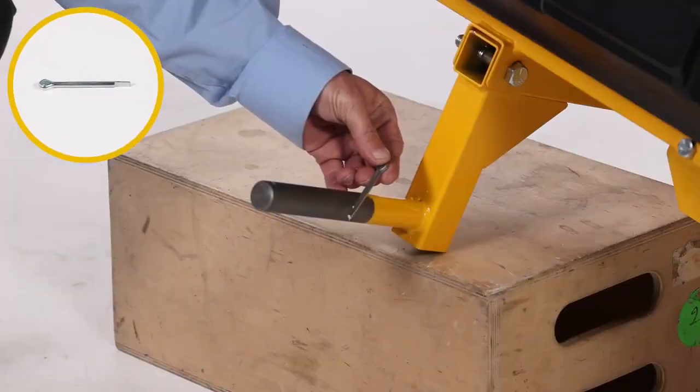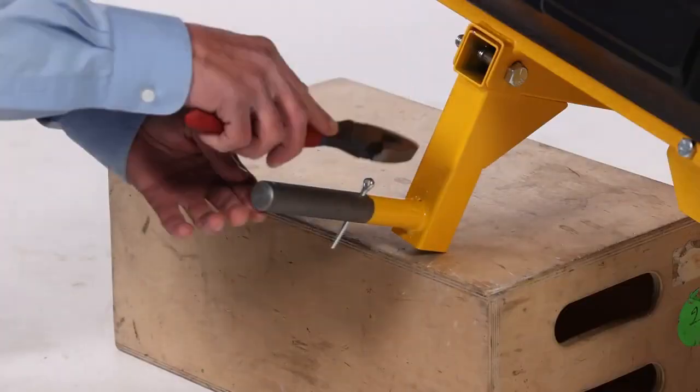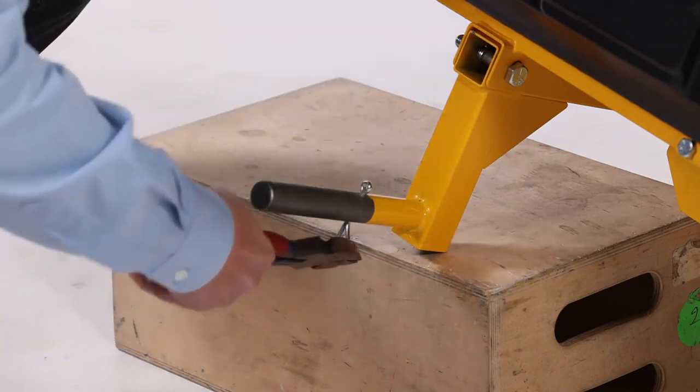Next, insert a 2-inch cotter pin, Part V, into the axle, and bend open the ends to secure it.